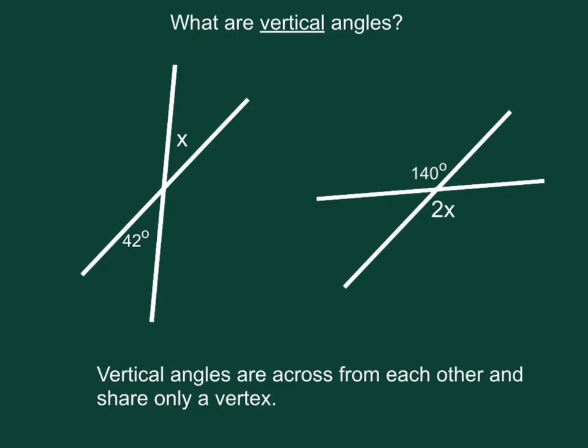Vertical angles are across from each other and share only a vertex, so this angle right here and this angle right here. Vertical angles are also congruent, so if this angle is 42 degrees, then we know the value of x is also 42 degrees.